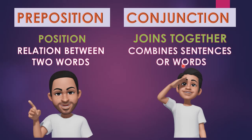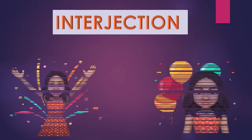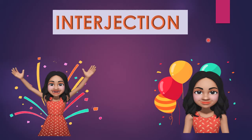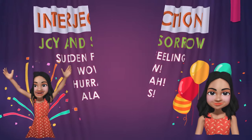Conjunction is a word which joins words, phrases, clauses, or sentences together. Let's move on to the last parts of speech. The last one is interjection. The interjection joins the family only in times of joy and sorrow. We use this word during a special occasion — that is, a happy or a sorrowful moment.